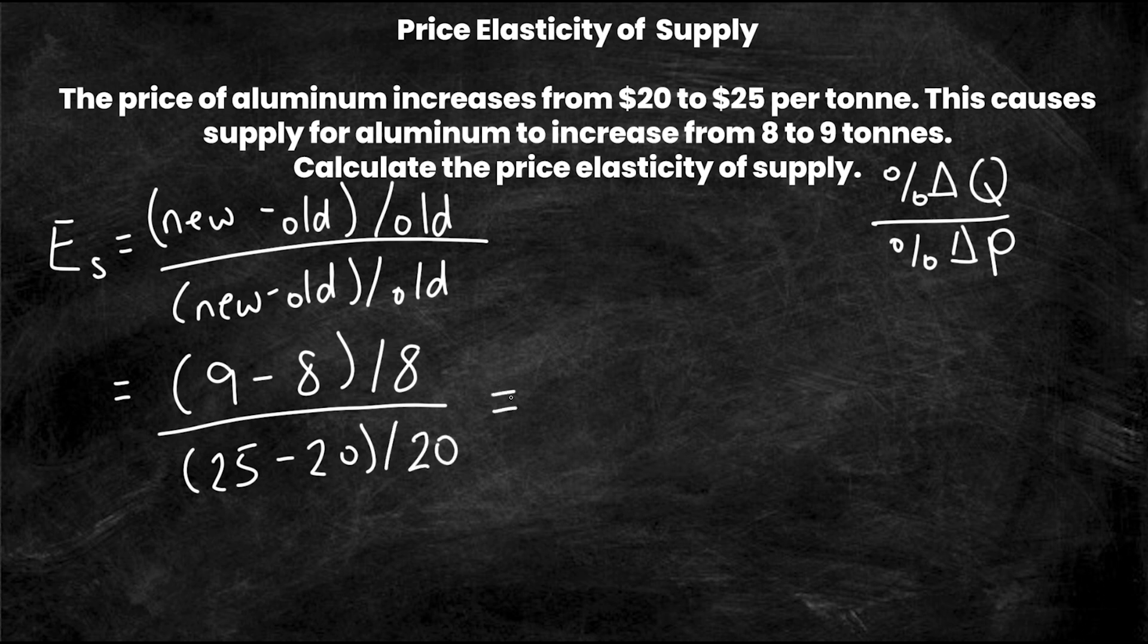Now let's simply solve this algebraically. So on the top we're going to have one over eight which is simply 9 minus 8 is 1 over 8 is one eighth and on the bottom we're going to have 25 minus 20 is 5 over 20. Now obviously I can actually reduce this bottom one so let me do that. I'm going to have one eighth over one quarter.